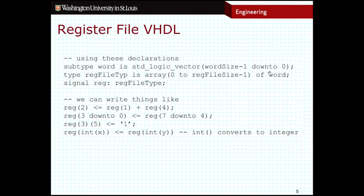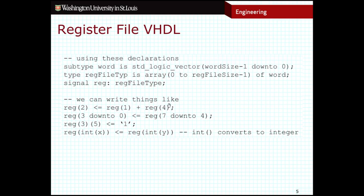'of word' indicates what I want this array to actually contain. Looking at the first line, word is defined as a standard logic vector from word_size down to 0. Word size in this case is 16 bits, so I have an array of either four or eight 16-bit values — this array is actually the register file. I then declare it as a signal: reg is a signal of type reg_file_type. That allows me to do things like register assignments, for example: register 2 equals the value of register 1 plus the value of register 4.